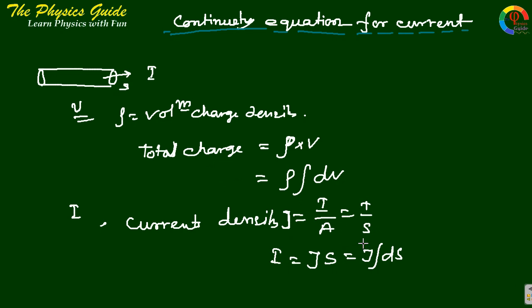Current density is a vector because area is a vector, so this can be written as J·dS. Current I is scalar, but current density J is vector. The dot product J·dS gives us the scalar current.